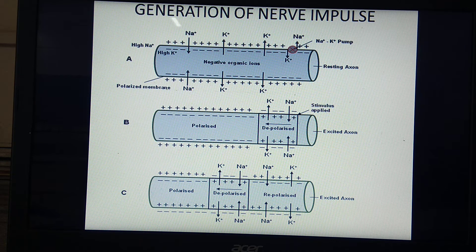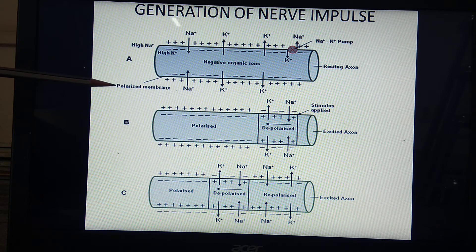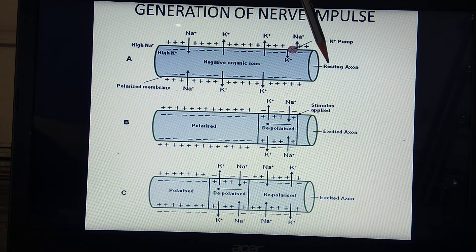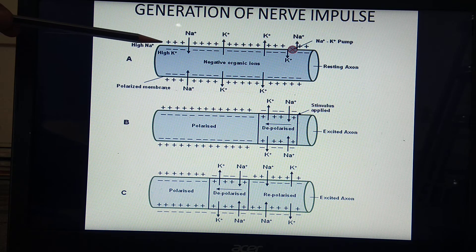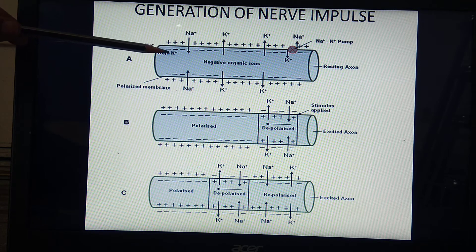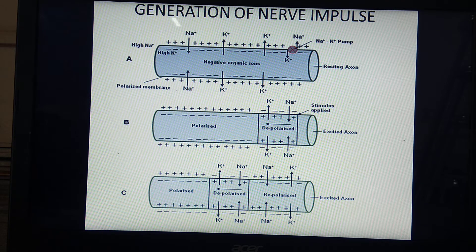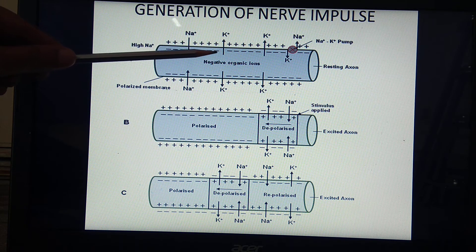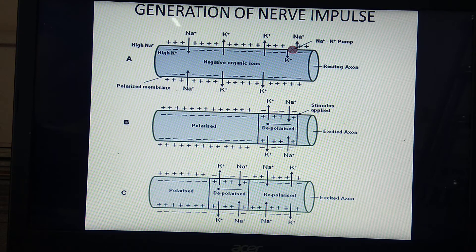What is the meaning of polarization or polarized state? In the diagram, three diagrams are shown. The first diagram shows the polarized membrane, which we can call the resting axon. Polarized state means the resting state of the axon. In this state, the neuron is positive towards the exterior side and negative towards the interior side.